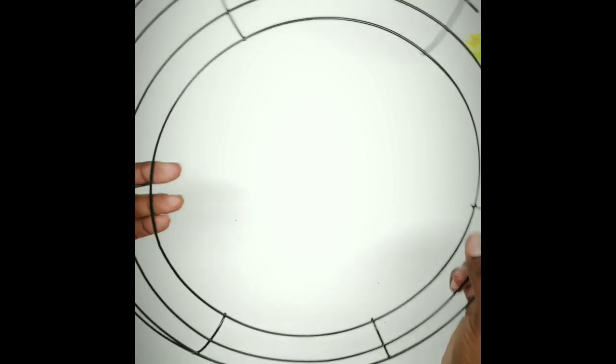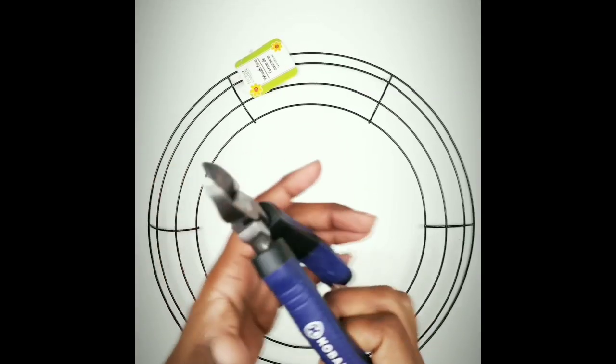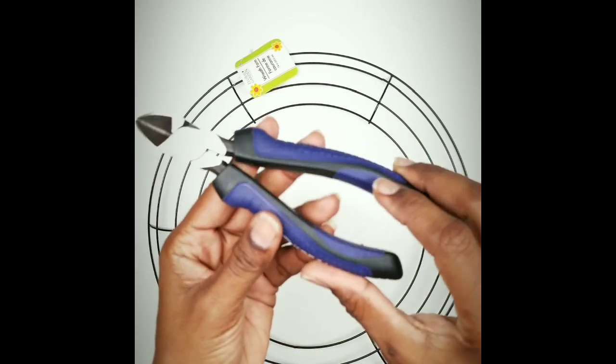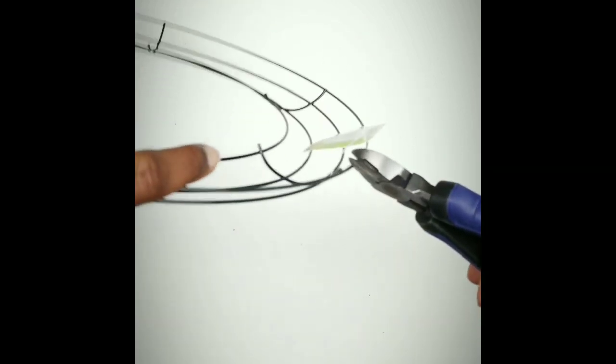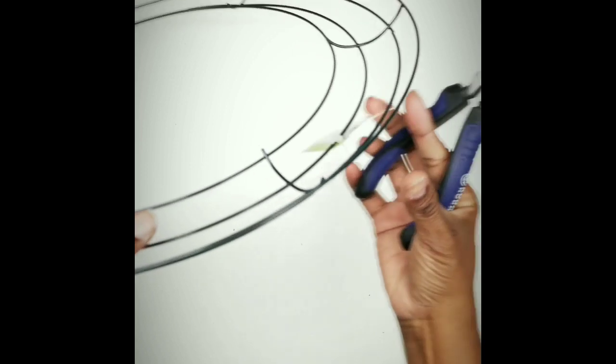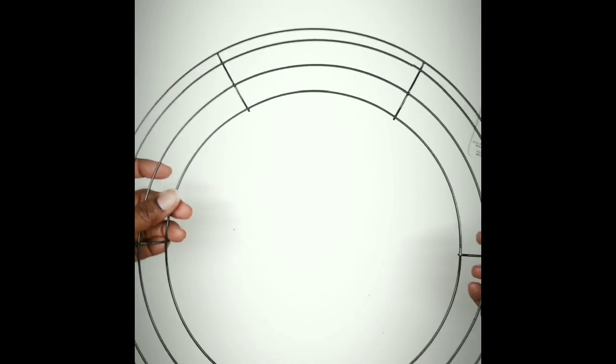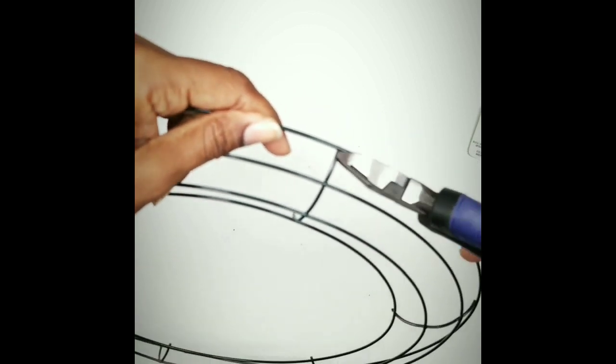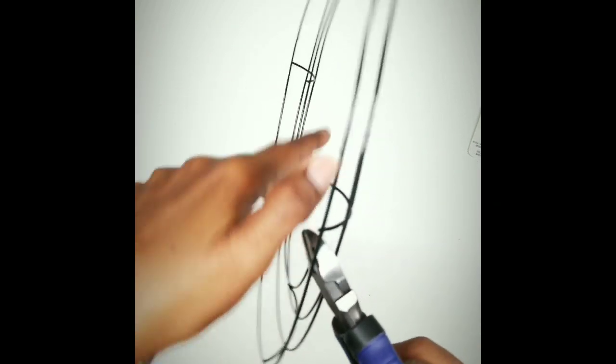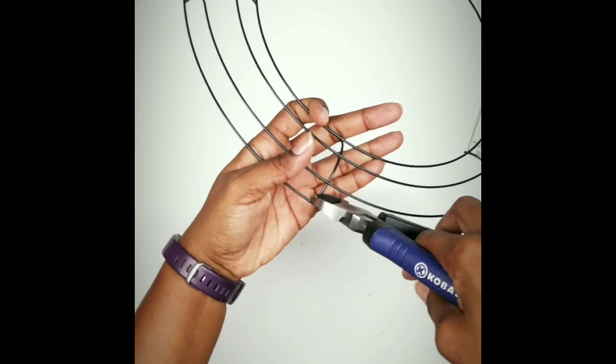The first thing we're going to do is we're going to take our wreath and we're going to be cutting it apart. Each one of the rings will be cut apart. If you have a pair of pliers or wire cutters, you will need those wire cutters to cut apart each ring of the wreath. Be careful not to split any of the rings. We just want to cut them into individual rings.